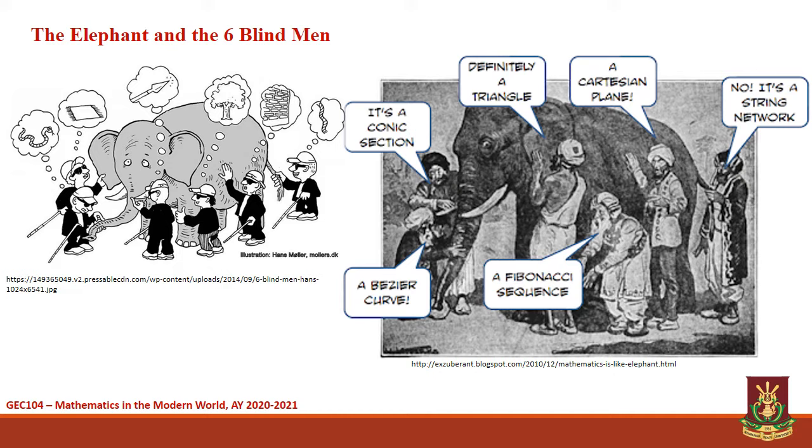Mathematics is like the elephant in the poem in the sense that depending on which part of mathematics you study, you get a very different idea of what mathematics is. Because there are different aspects and representations in mathematics, it is not difficult for students and even teachers to be so focused on a particular area in mathematics and fail to see the whole picture.